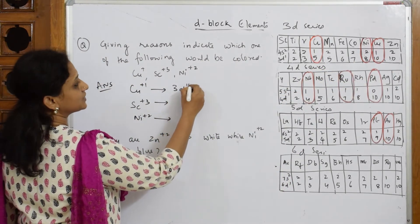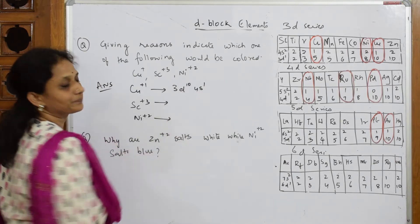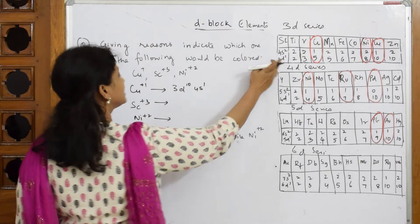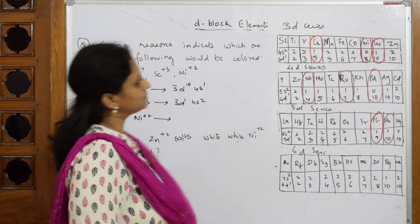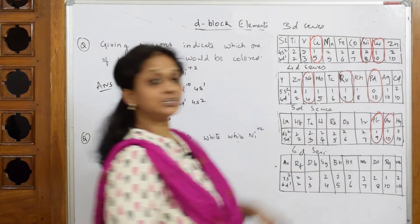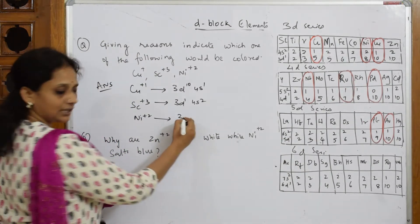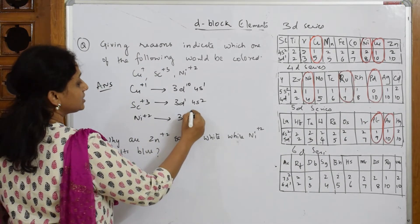3d first write the configuration: 3d10 4s1. They've given me scandium. Scandium is 3d1 4s2. They've given me nickel, so nickel is here 3d8 4s2.